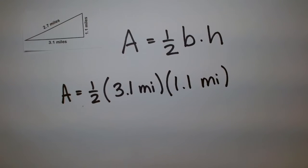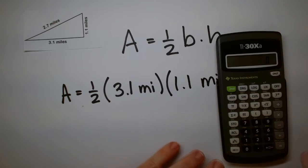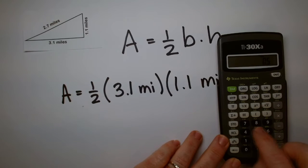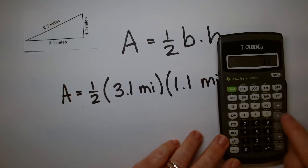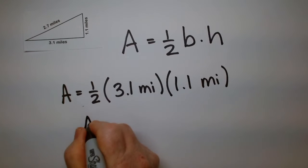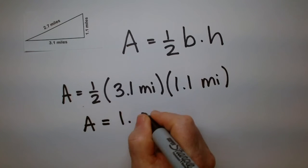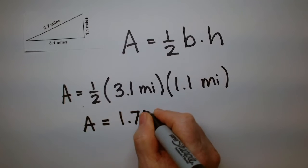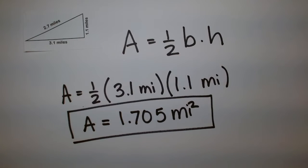And then you can use your calculator if you'd like. So I have one half is 0.5 times 3.1 times 1.1. So I get a 1.705. So my area is 1.705, and it's square miles.